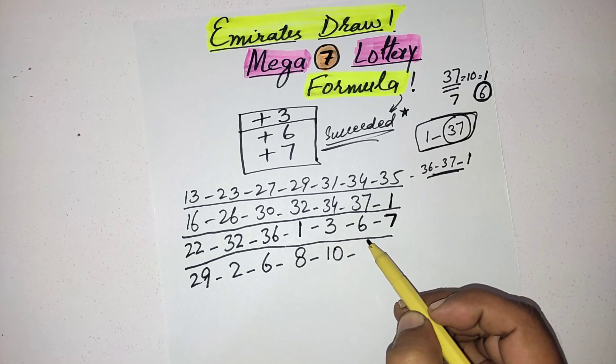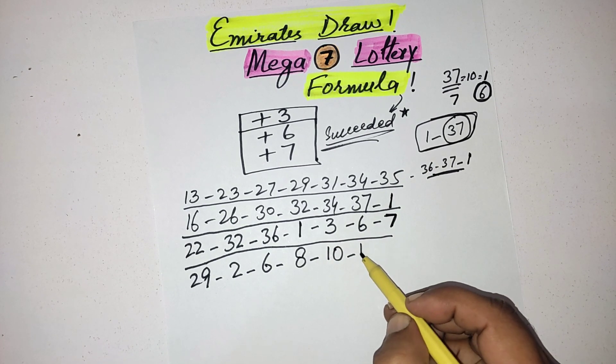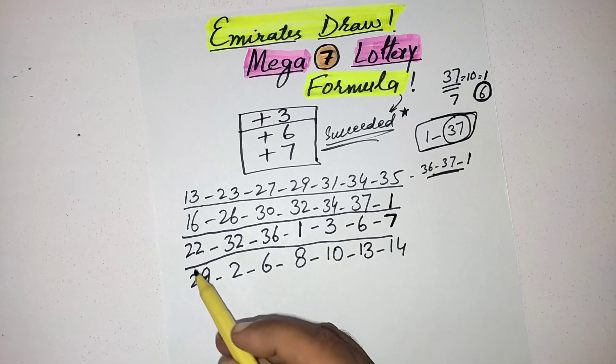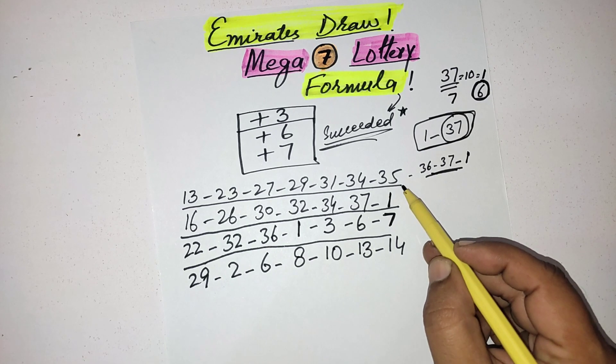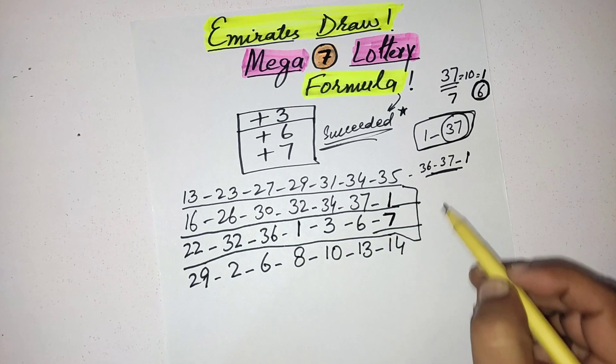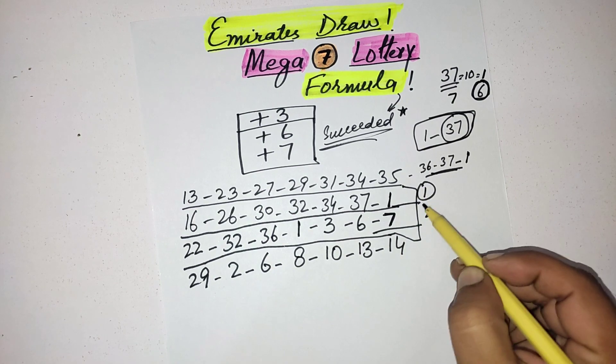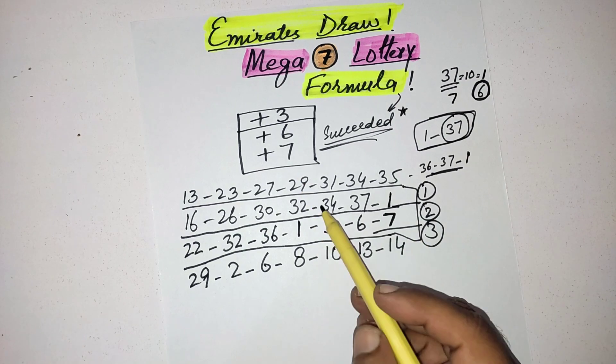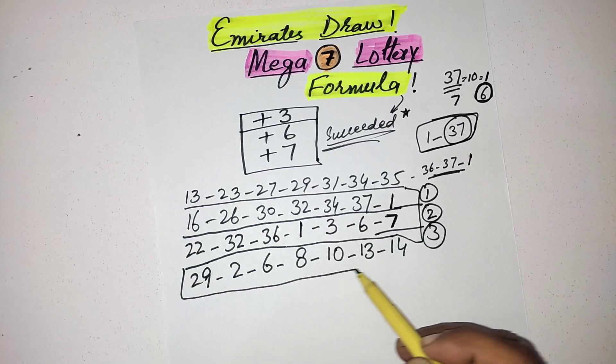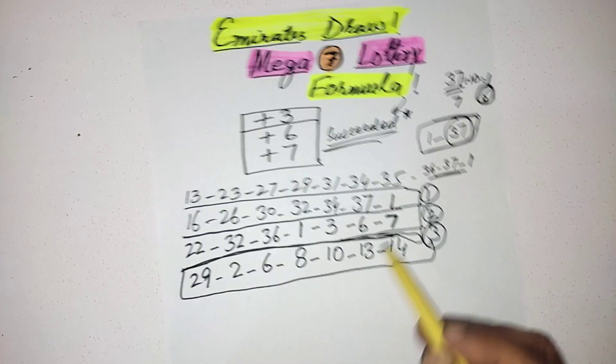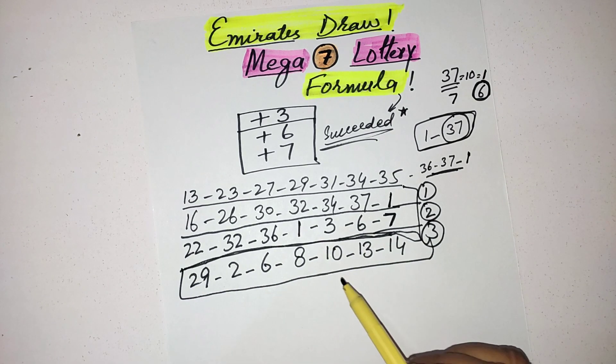1 plus 7 answer is 8, 3 plus 7 answer is 10, 6 plus 7 answer is 13, and 7 plus 7 answer is 14. These three lines you got with these codes. This is your main line, these numbers are main numbers for the upcoming draw.